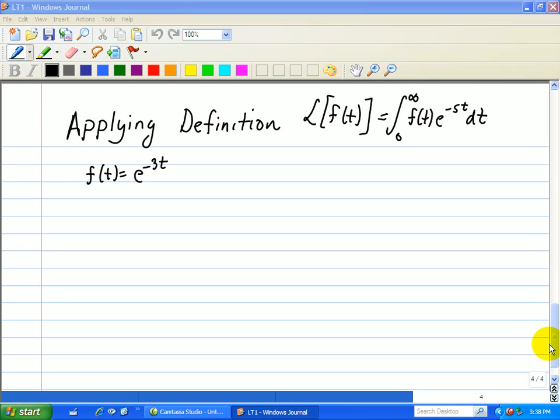We'll do another example, and this one is particularly important because we're dealing with exponentials. So here, f of t is e to the minus 3t.